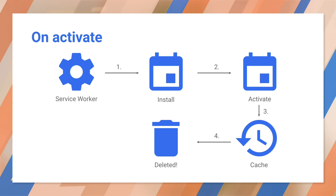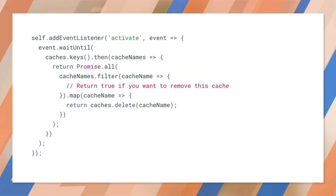Caching in response to the Service Worker activate event is ideal for cleanup tasks. Once a new Service Worker is installed and a previous version isn't being used, the new one activates and you get an activate event. Because the old version is out of the way, it's a good time to delete unused caches. During activation, other events such as fetch are put into a queue, so a long activation could potentially block page loads. Keep your activation as lean as possible and only use it for things you couldn't do while the old version was active.